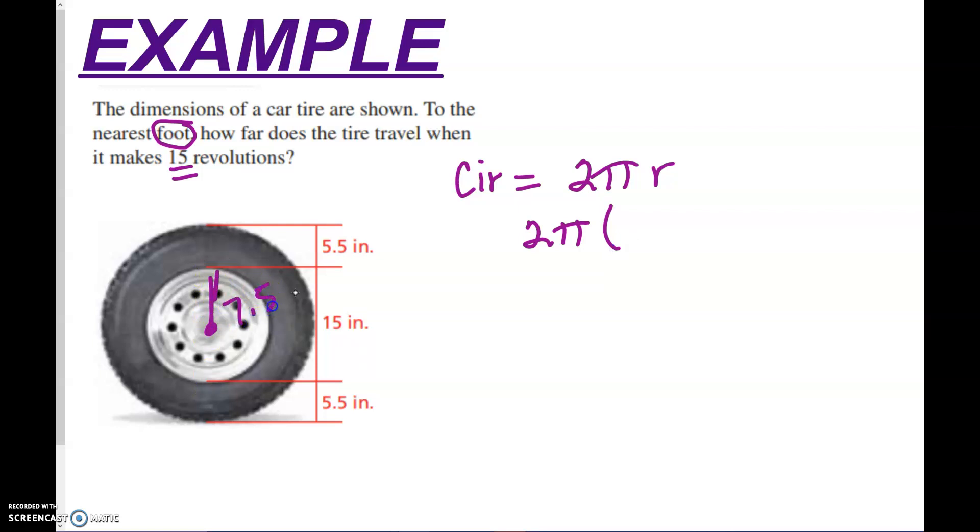And then this radius is going to be from here to here. Instead of being the whole thing, that's 7.5. Plus, I have to add that 5.5. So what does that end up being? 13.